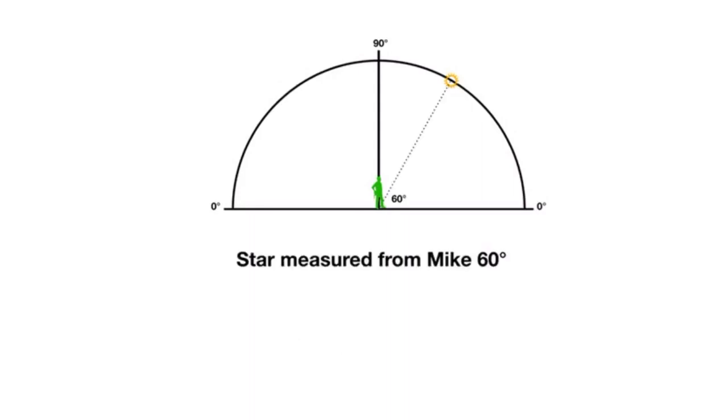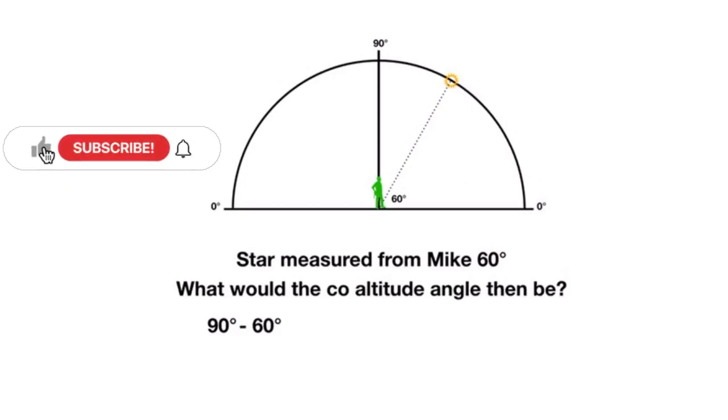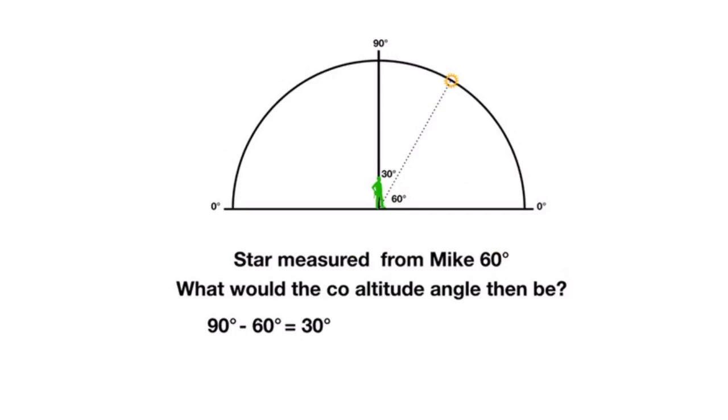Star measured from Mike would be 60 degrees. Please do note, I am not going to do any corrections for this. This is just simply to explain how you're going to get your GP distance. What would the co-altitude angle then be? First we have to know is Mike is standing on a 90 degree angle. His elevation angle is zero. So how would you get your co-altitude angle, Mike? Simple. He measured his 60 degree angle. You know he's standing at 90 degrees. So we take his 90, we minus the 60 that he measured and you get your co-altitude angle, which would be 30 degrees.